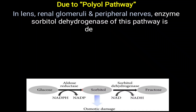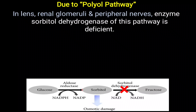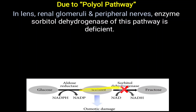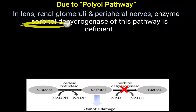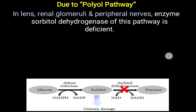Particularly in some tissues like the lens, renal glomeruli, and peripheral nerves, the enzyme sorbitol dehydrogenase of the polyol pathway is deficient. Decreased activity of sorbitol dehydrogenase leads to the accumulation of sorbitol. Sorbitol, being a type of alcohol, attracts more water molecules into those particular tissues — the lens, renal glomeruli, and peripheral nerves.